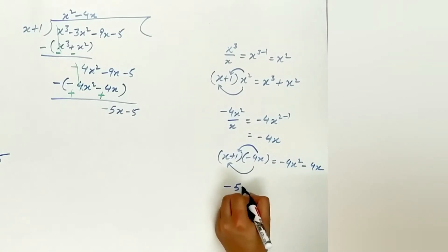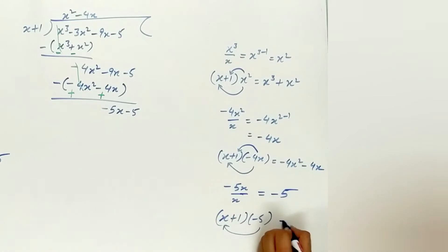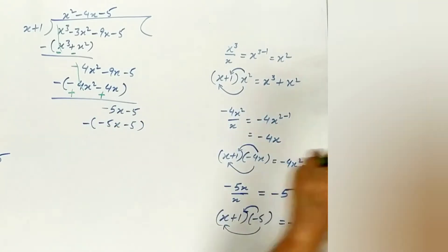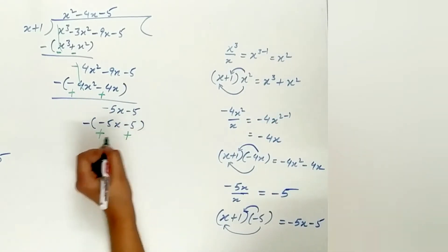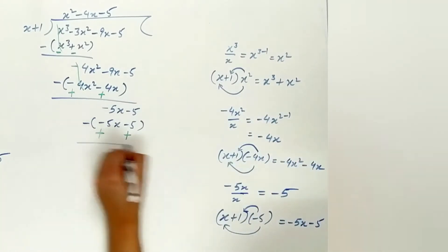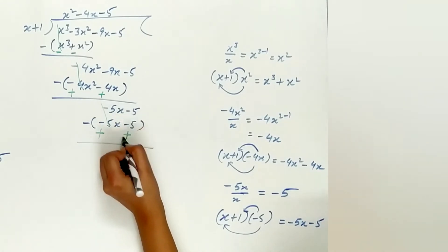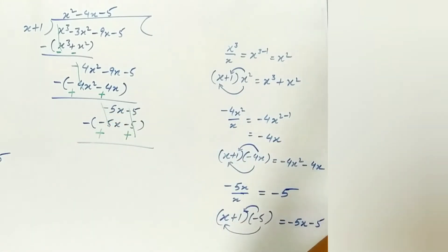Divide minus 5x by x, which is equal to minus 5. Multiply x plus 1 by minus 5. x multiply minus 5 is minus 5x and 1 multiply minus 5 is minus 5. Change the sign. Minus 5x plus 5x is zero. Minus 5 plus 5 is zero.